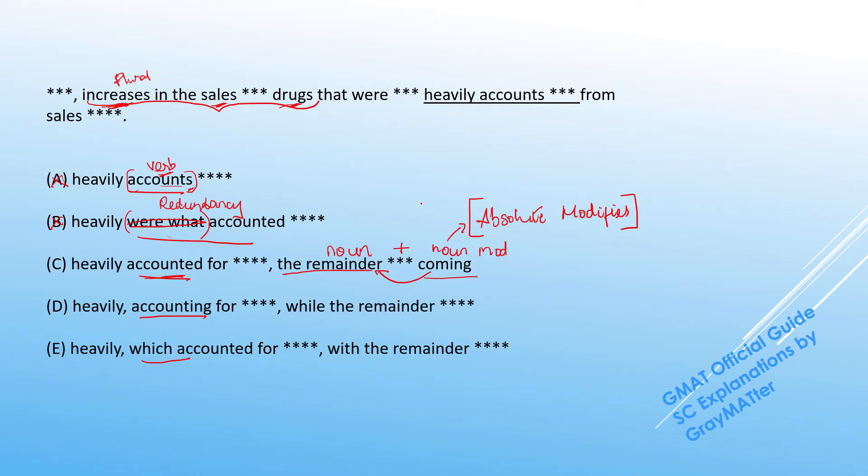And what is the function of an absolute modifier? It modifies the whole clause in front of it. So 'increases in the sales accounted for something,' and 'the remainder of the increase coming from something else.' So this makes a perfect clause modifier; we can hold on to C.